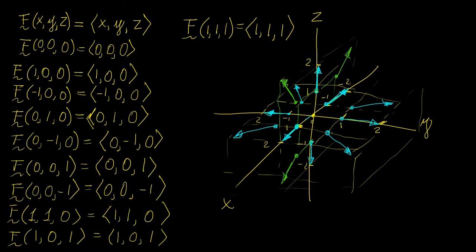It's a little bit hard to draw a three-dimensional vector field on a set of axes on a blackboard, but hopefully you get the idea of what's happening. You can imagine that in the end, drawing additional vectors here and there, the whole thing is going to look like the vectors are just increasing in length as you move further away from the origin.